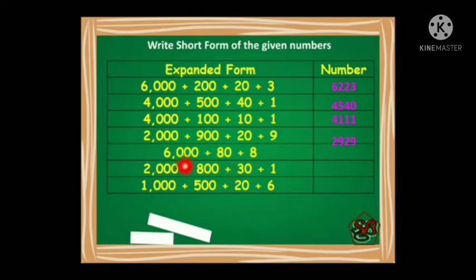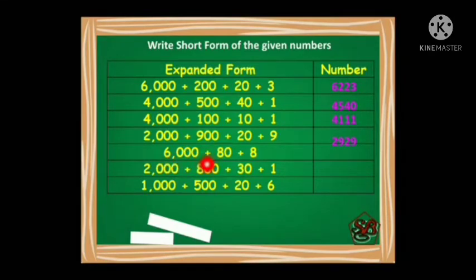Moving on to the next example: 6000 plus 80 plus 8. Here you see there is no number at the hundreds place. So 6 goes in thousands place. As there is no number at hundreds place, we put 0 there. Eight at tens place and 8 at ones place — the number formed is 6088.